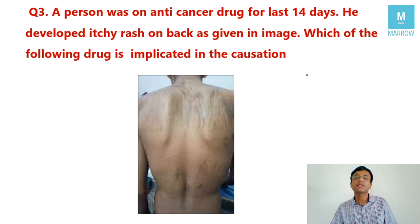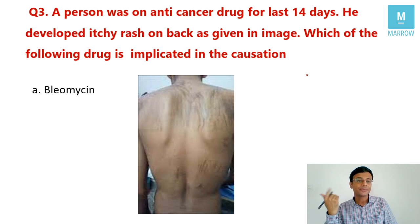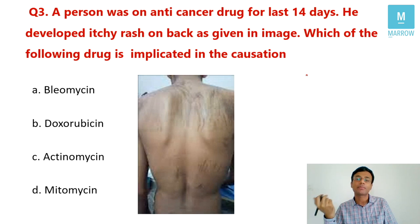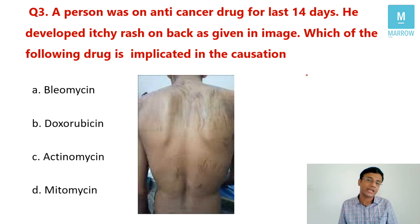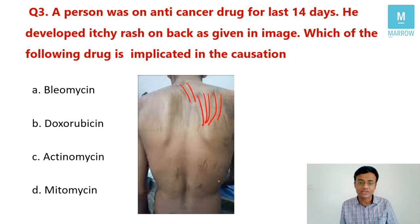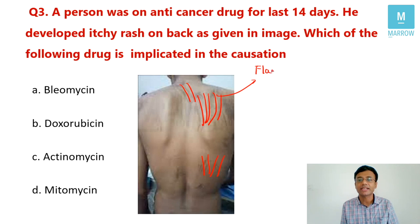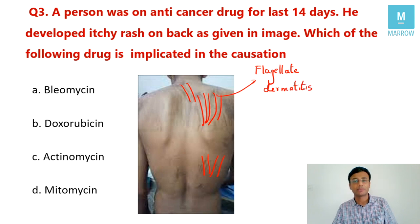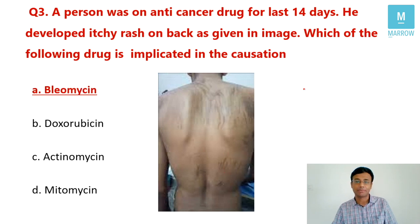Question number three: A person on an anti-cancer drug for 14 days developed an itchy rash on the back. Options were bleomycin, doxorubicin, actinomycin, and mitomycin. Looking at the image carefully, you can see multiple linear streaks over the back — this condition is called flagellate dermatitis. The most important drug producing flagellate dermatitis is bleomycin.